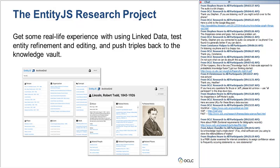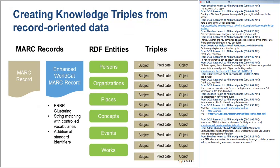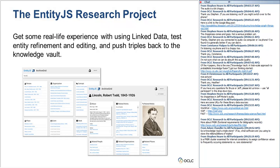We got a question: is the knowledge vault a triple store, and if so, what software are you using to store millions or billions of triples? The knowledge vault as a term from Google's perspective is really more of the overall process, but one component at the end is a bunch of triples. We started with about 4 million records; when we derive entities out of those, we get about 40 million entities, and it goes up to roughly 400 million statements to store.